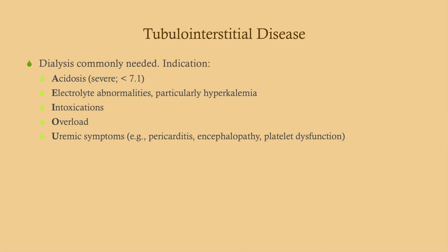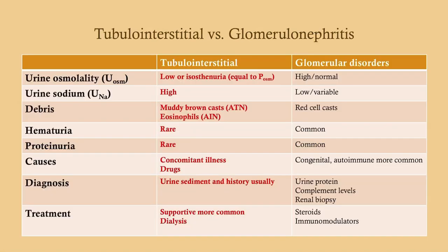Indications for dialysis include: severe acidosis with pH less than 7.1; electrolyte abnormalities, particularly hyperkalemia with EKG changes; intoxications such as methanol or ethylene glycol; severe fluid overload; and uremic symptoms — not just azotemia, but severe azotemia causing symptoms like pericarditis, encephalopathy, and platelet dysfunction.